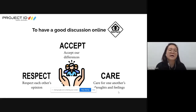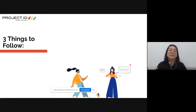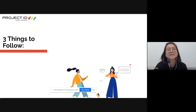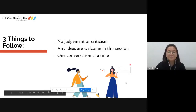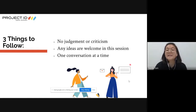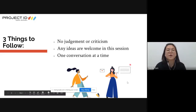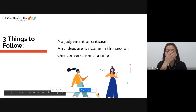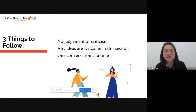These values are needed not only online but offline in our classrooms as well. For a good discussion, there are three things we need to do together: first, no judgment or criticism; second, any idea is welcome - there is no right or wrong idea; and third, one conversation at a time - let the other person finish before you speak up.